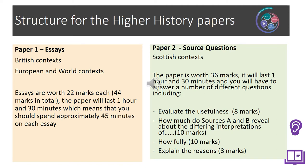As part of Paper 2, you will answer a number of different question types: an Evaluate the Usefulness question worth 8 marks, a How Much Do Sources A and B Reveal question — sometimes called the Two Source Question — worth 10 marks, a How Fully question also worth 10 marks, and an Explain the Reasons question worth 8 marks. The Evaluate, Two Source, and How Fully questions all use historical sources, while the Explain question requires you to use your own knowledge.